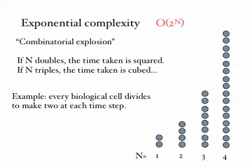So 2 to the 2 is 4, and then if we double N, we say 2 to the 4, we've got 16. That is, we've increased here by the square.